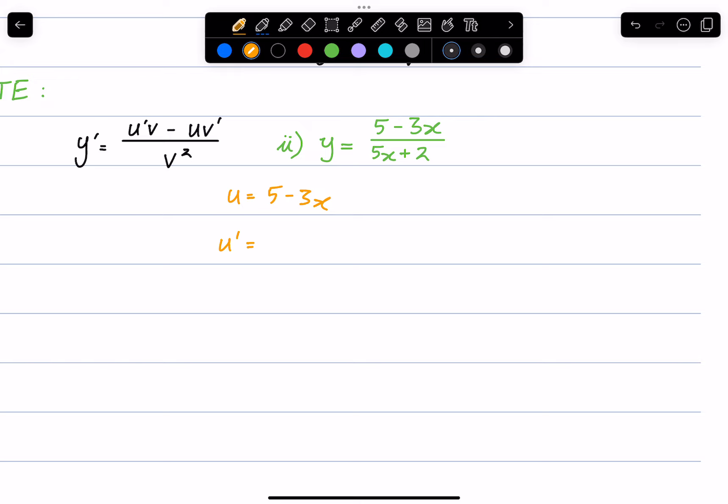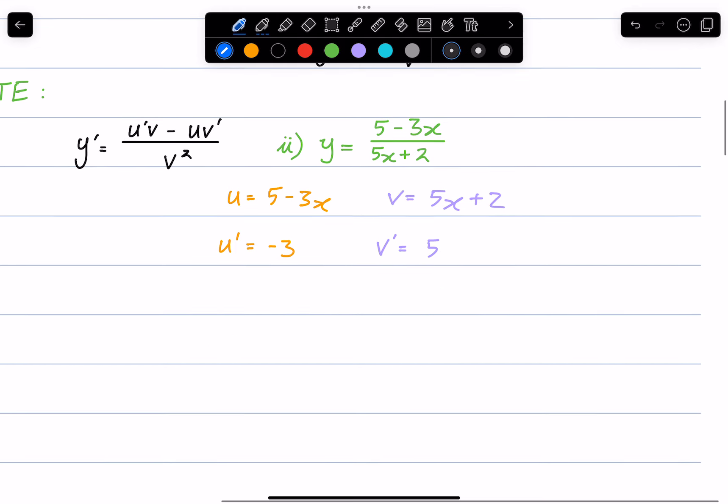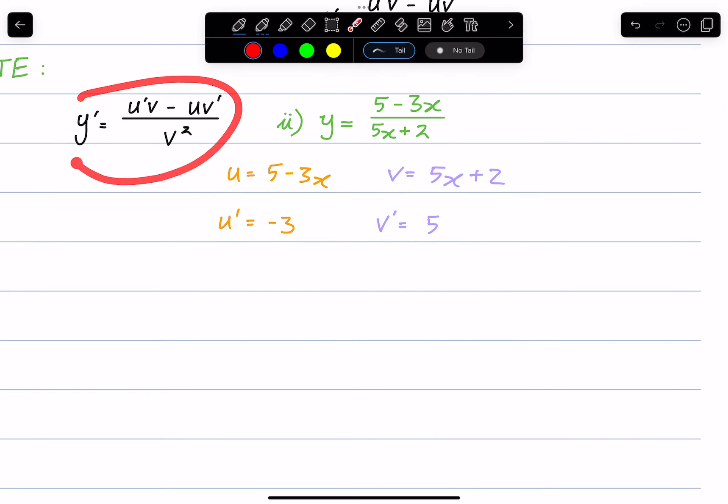u' is its derivative, which is just -3. v is the denominator, 5x + 2, so v' is just 5. Following our rule, the derivative y' equals u' times v.